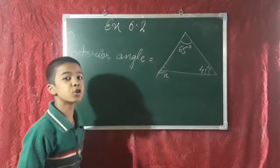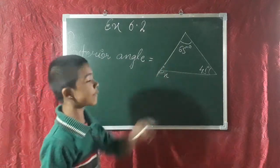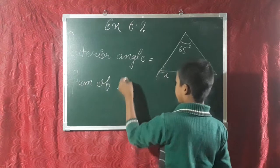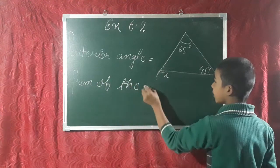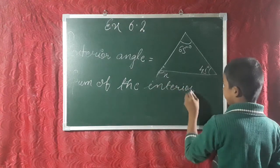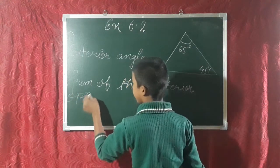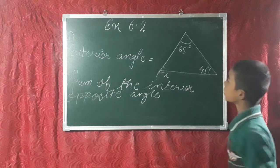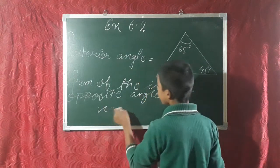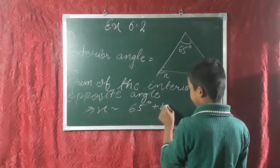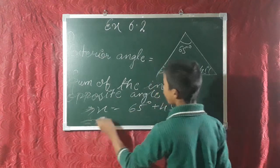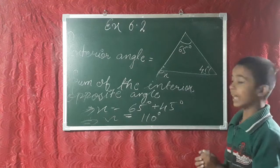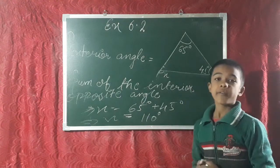Now moving to question number 2 of exercise 6.2. This is our figure. The exterior angle is equal to the sum of the interior opposite angles. So x is equal to 65 plus 45 degrees. Therefore x is equal to 110 degrees. Hence the value of the exterior angle in this figure is 110 degrees.